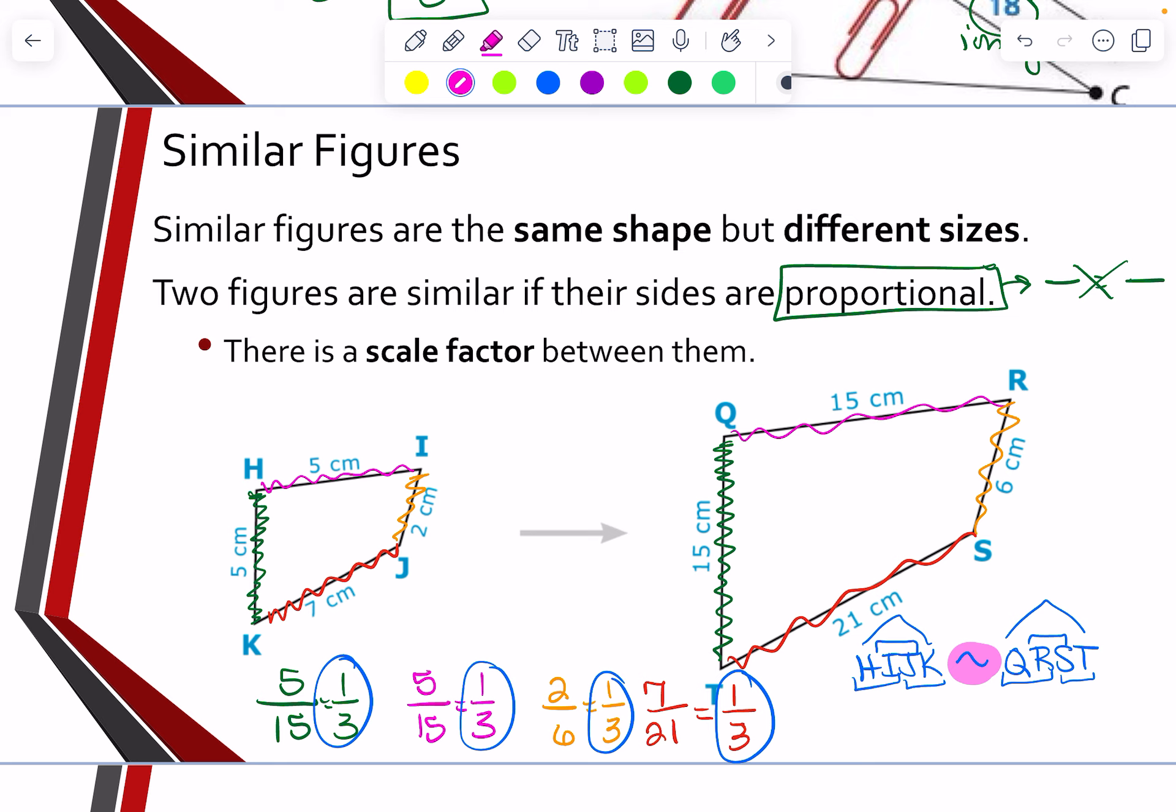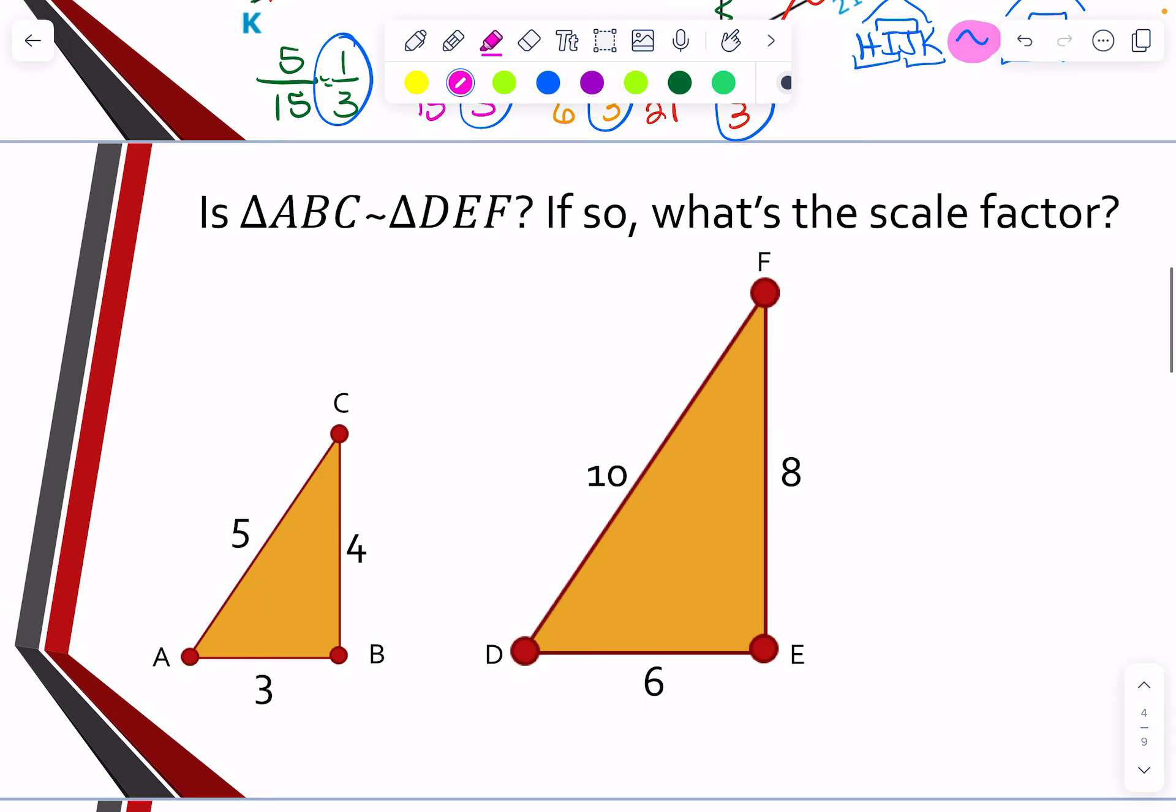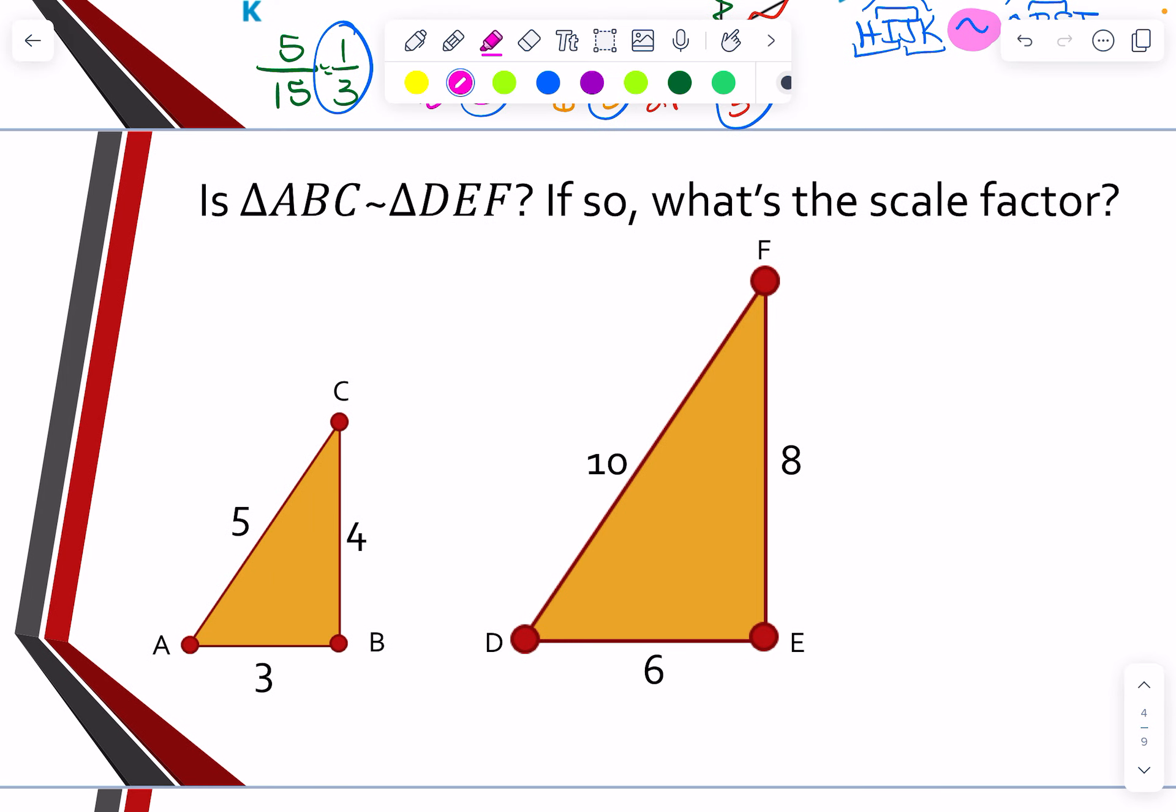So what we're going to do is we're going to use this idea of scale factors along with this idea that the sides are proportional to be able to find missing values in a shape or a figure. So if we look here, it says, is triangle ABC similar to triangle DEF? If so, what's the scale factor? So if we look at this, this is telling me AB 3 is to DE 6.